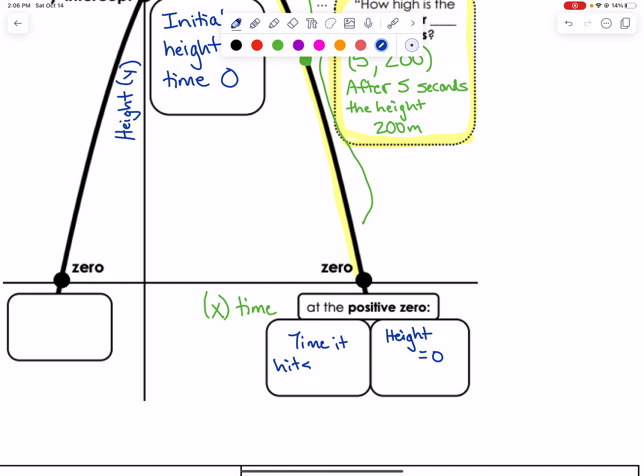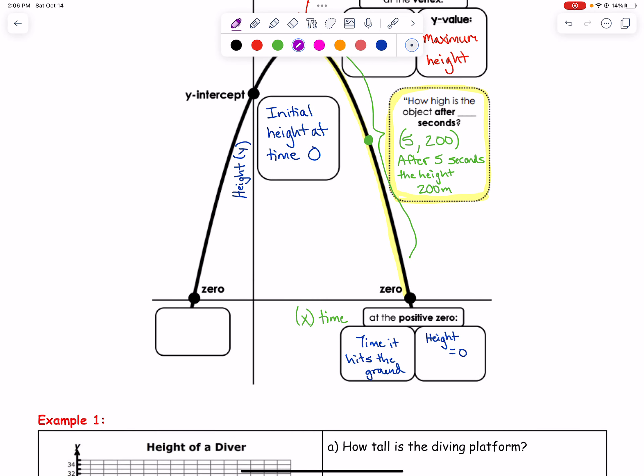Over here on the negative side, we typically don't need this value because it doesn't make sense—that's where time would be negative. We don't typically need the values over here on this side because that's not going to be very logical.